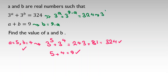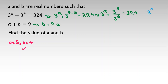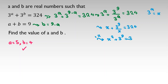Using the power rule, 3 to the (9 minus a) equals 3 to the 9 over 3 to the a. Let x equal 3 to the a, so the equation becomes x plus 3 to the 9 over x equals 324. Multiplying both sides by x gives x squared plus 3 to the 9 equals 324x. Rearranging: x squared minus 324x plus 3 to the 9 equals 0. This is a quadratic equation.